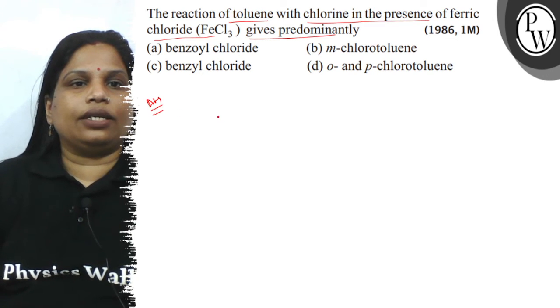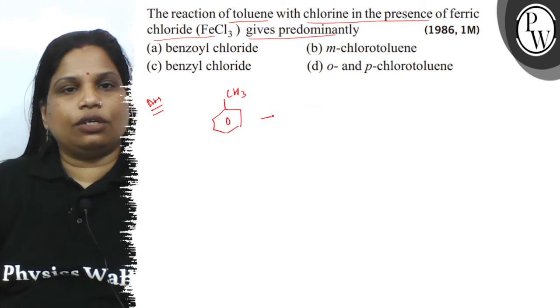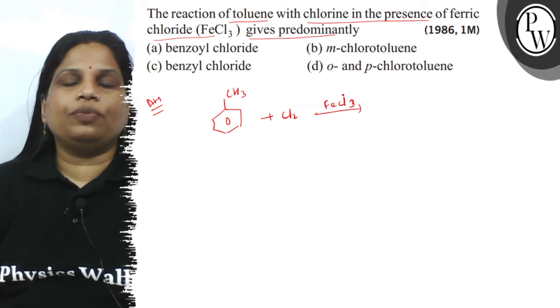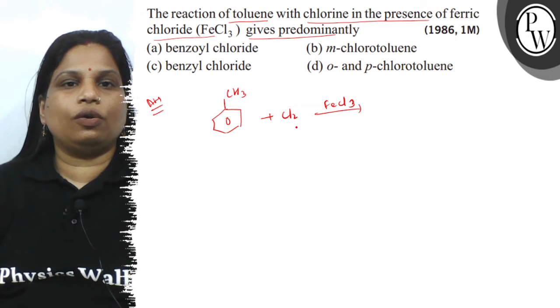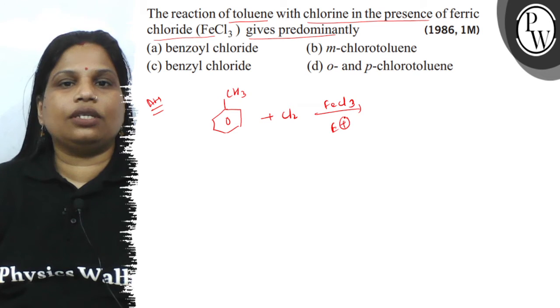Here the reactant is toluene and it is treated with chlorine in presence of ferric chloride FeCl3. In presence of Lewis acid and molecular chlorine, this is a chlorination reaction which is followed by electrophilic substitution.